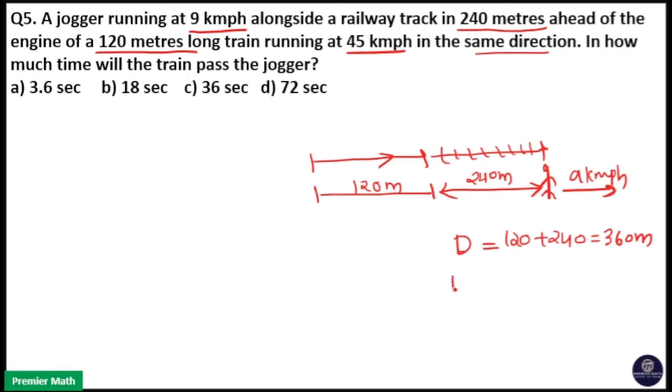Speed is equal to relative speed. When both bodies are moving in the same direction, speed will be subtraction of the two speeds. Here 45 kilometers per hour is the train speed and 9 kilometers per hour is the jogger speed, so that is 36 kilometers per hour.